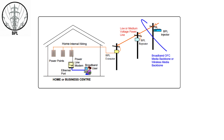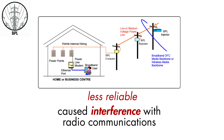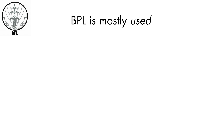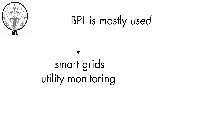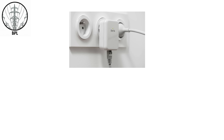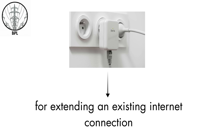These limitations made BPL less reliable than cable or fiber and caused interference with radio communications — one of its biggest challenges. Today, BPL is mostly used for smart grids and utility monitoring. Inside homes, power line adapters remain useful for extending an existing internet connection.